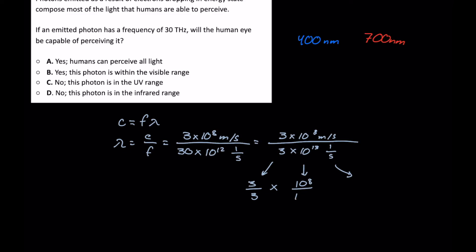So we get 3 over 3 times 10 to the 8th over 10 to the 13th, times meter over second, divided by 1 over seconds. It's going to be equivalent to multiplying by the reciprocal, which is seconds over 1 here.